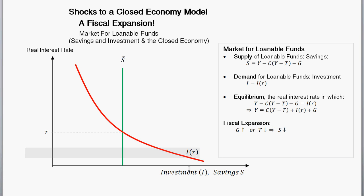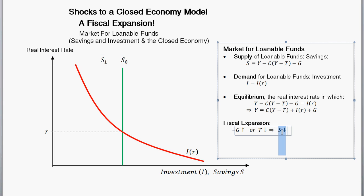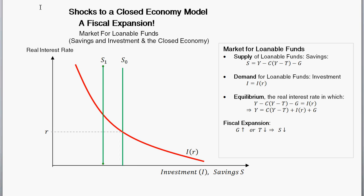Investment is unchanged since it's just a function of the real interest rate. To show the change in the savings schedule, we add a subscript: S-sub-zero is where we started, and S-sub-one is the new savings line after the fiscal expansion. Because savings decreased, this is an inward (leftward) shift of the savings line.